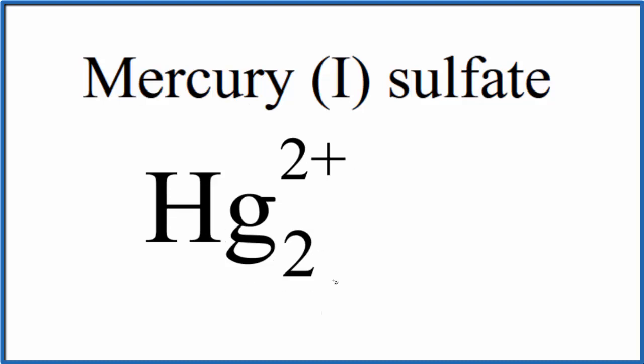Since we have two mercury atoms, each one is 1+. That's why we have the (I) in the name mercury(I) sulfate. Sulfate, you're not going to find that on a periodic table. This A-T-E ending tells you it's a polyatomic ion.